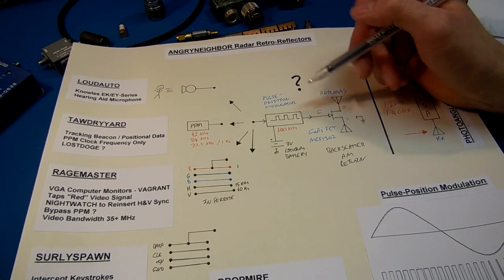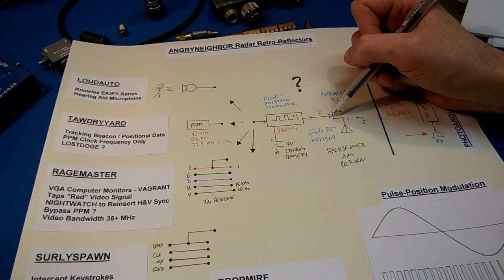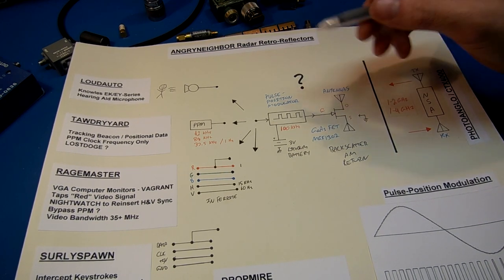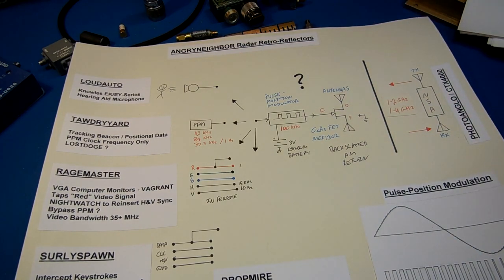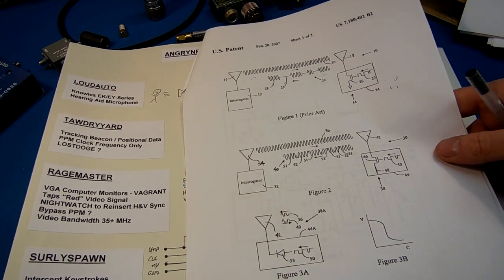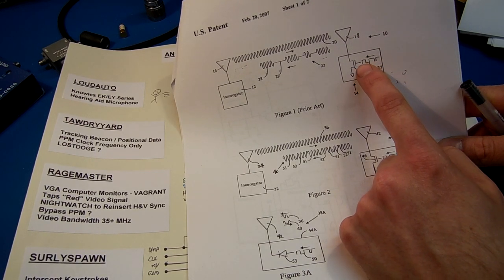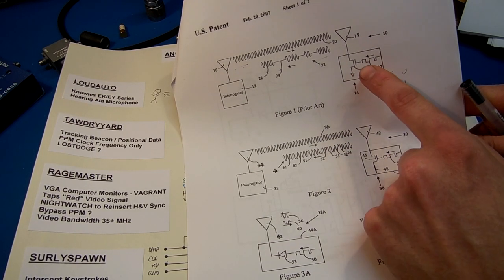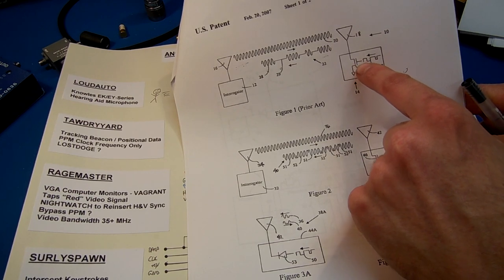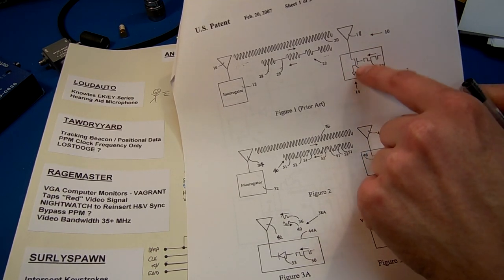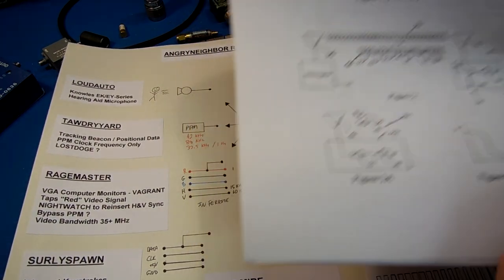And what this does is it feeds the gate of a GaAs FET, which is a type of FET that operates at microwave frequencies. The pulse position modulator then toggles the FET on and off, which acts essentially like a switch. But in reality, it's more like an attenuator. And that's how it creates the backscattered modulation.